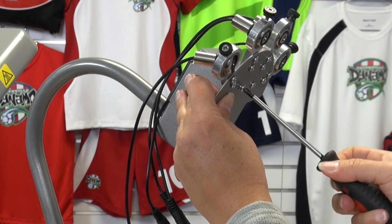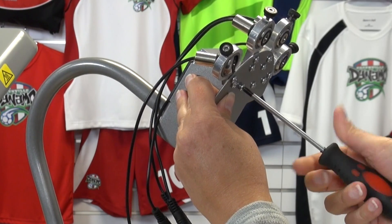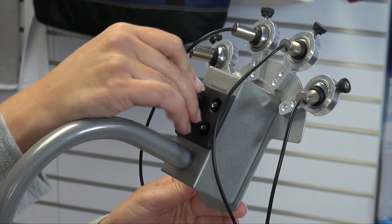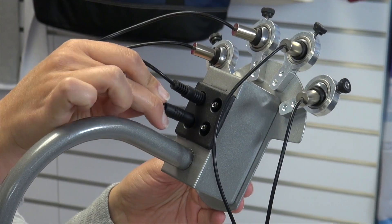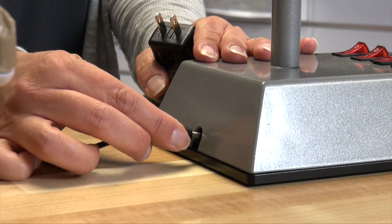Using a Phillips screwdriver, attach the laser plate to the stand. Plug the wires into the plastic caps on the back of the head. Then plug in the power adapter.